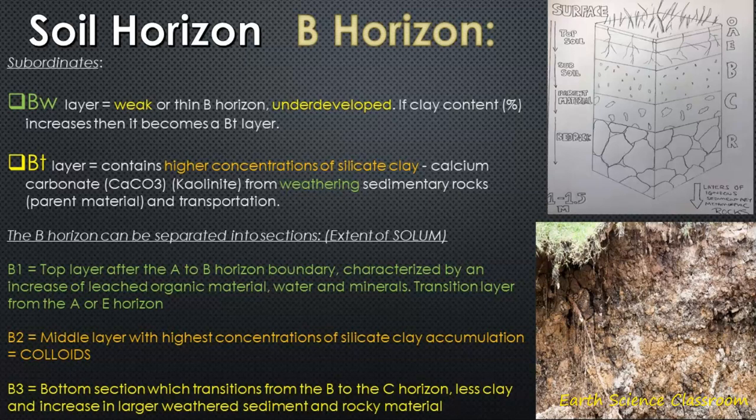Then you get B3, the bottom layer — the basement layer — which is the transition between the B and the C-Horizon. You would have perhaps larger weathered material from the R-Horizon or C-Horizon, and a lot less organic material and a lot less clay. You're starting to get to the end of what's called the Solum, which is the name given to the top part of the soil — the mixture of components which make up soil. The bottom of the B really is the extent of this layer.